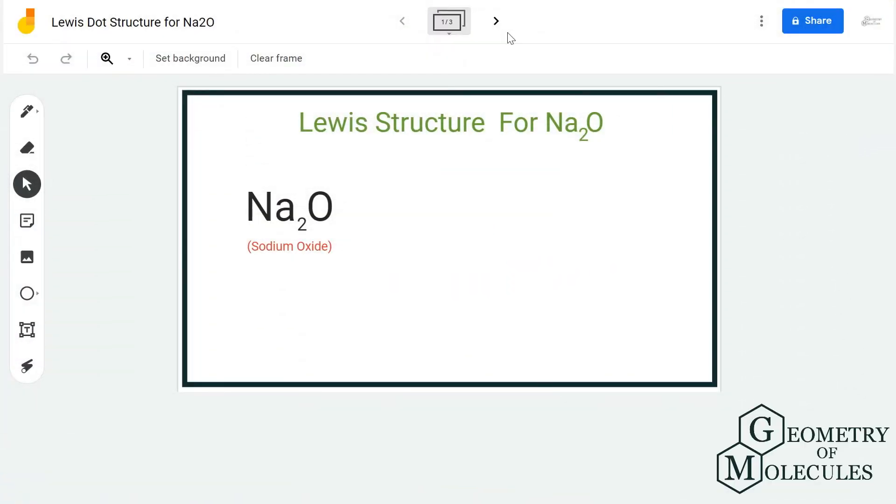Hi guys, today in this video we are going to look at the Lewis dot structure for Na2O, which is also known as sodium oxide. Now unlike other molecules or compounds, this one is an ionic compound because it has an ionic bond.